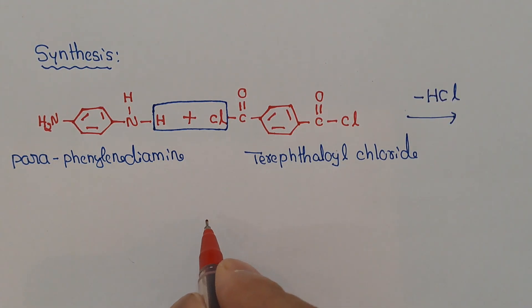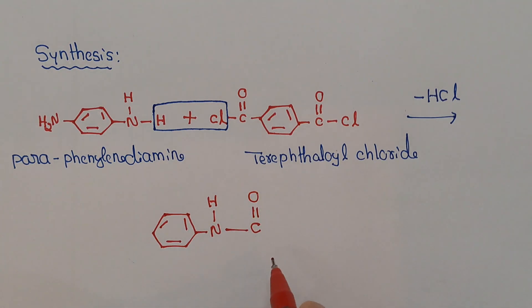And it yields the product Kevlar. Now this is the benzene ring here. This hydrogen is lost from here and it forms a bond with this carbon, CO, another benzene ring, then CO.